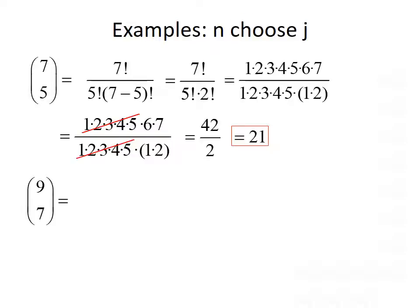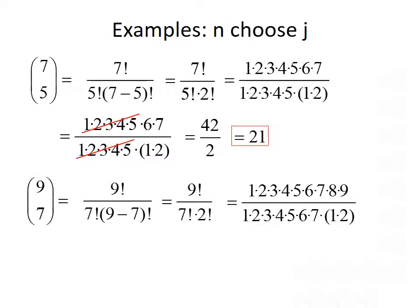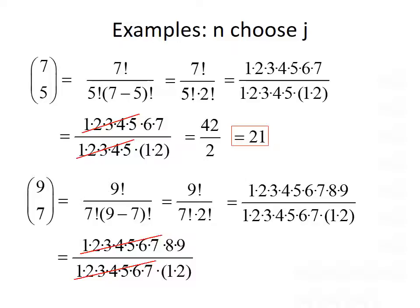For 9 choose 7, plugging 9 in for n and 7 in for j, we get 9 factorial divided by 7 factorial times 2 factorial. Expanding and canceling the product of 1 through 7 from both the numerator and denominator leaves us with 8 times 9 divided by 1 times 2, which is 72 divided by 2, giving us 36.